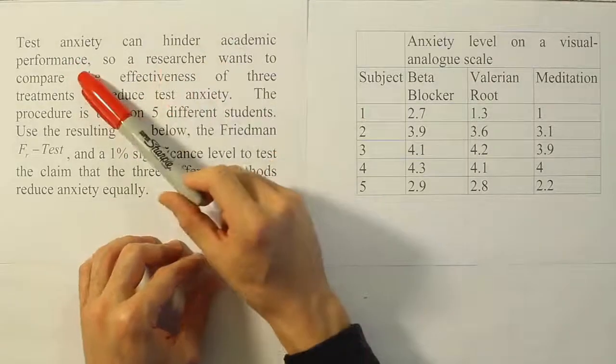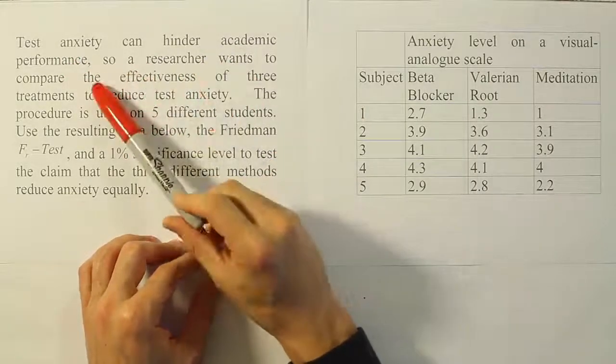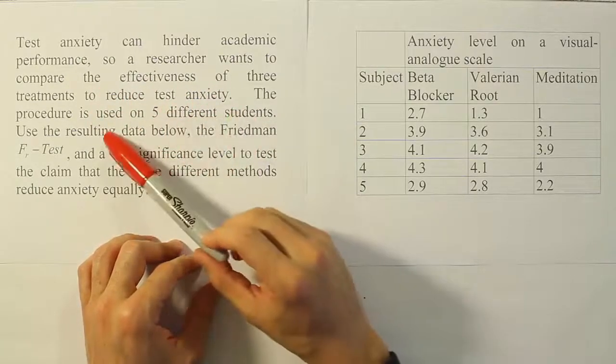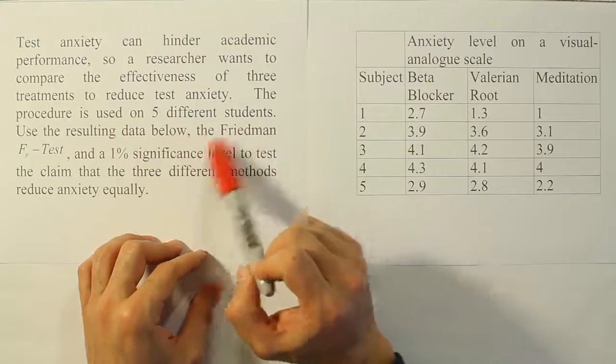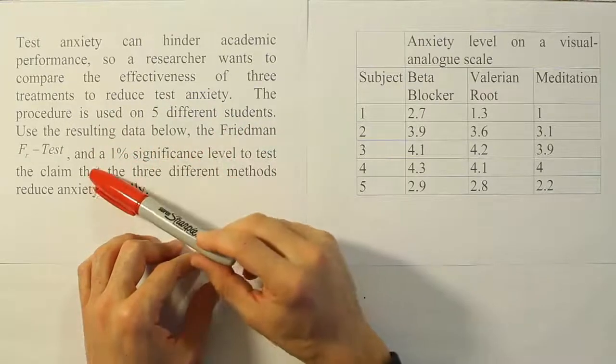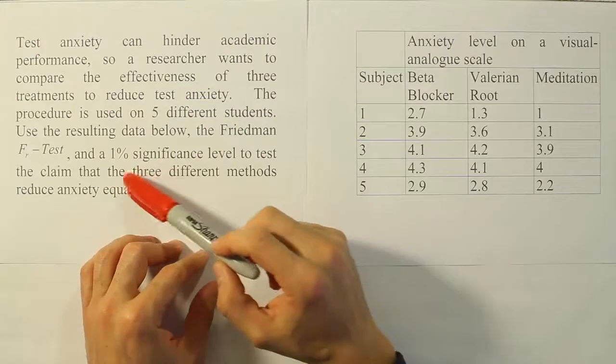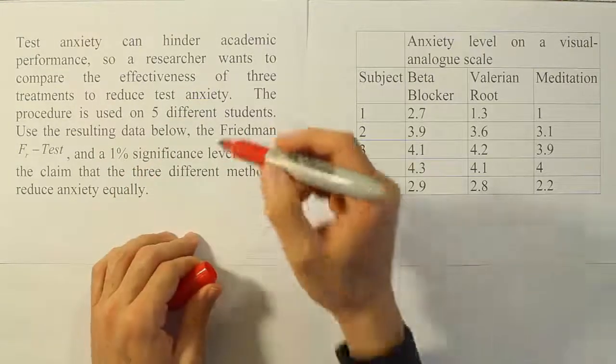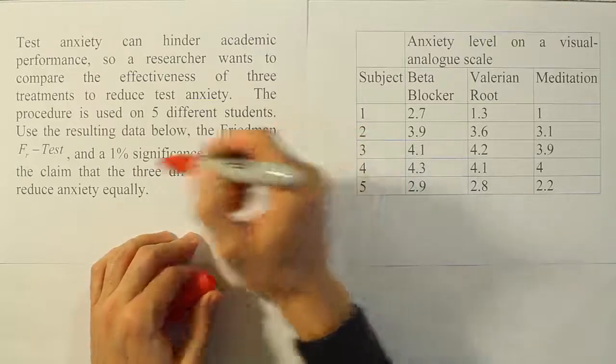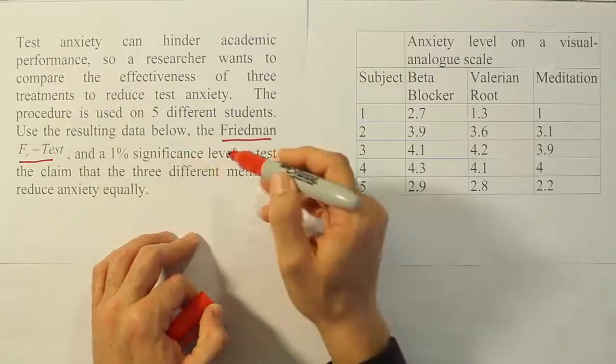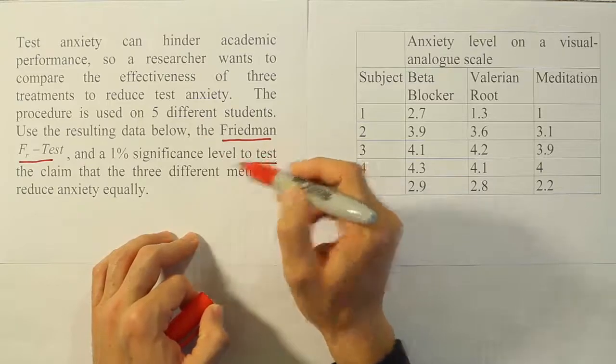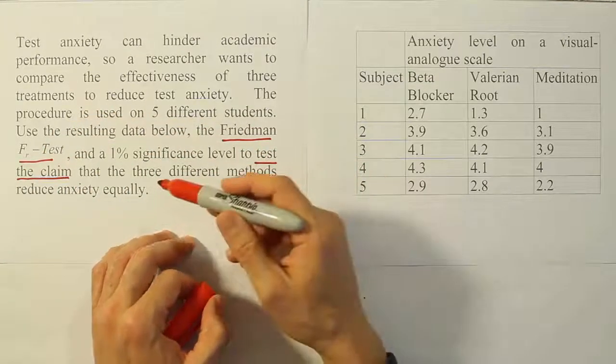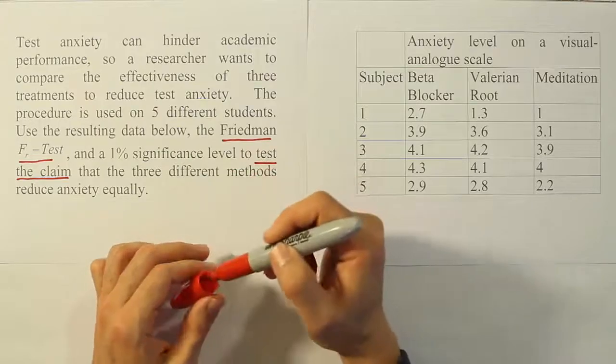Test anxiety can hinder academic performance, so a researcher wants to compare the effectiveness of three treatments to reduce test anxiety. The procedure is used on five different students. Use the resulting data below, the Friedman FR test at a 1% significance level to test the claim that the three different methods reduce anxiety equally.